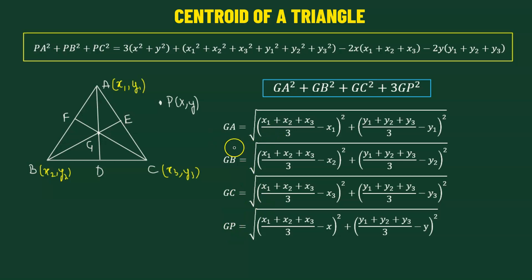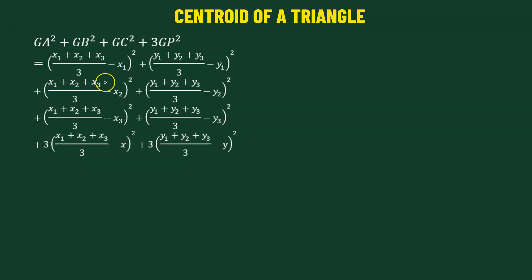The next step is to square each of the lengths GA, GB, GC, and GP, and then substitute into the expression. So we obtain the expression for GA² + GB² + GC² + 3GP².